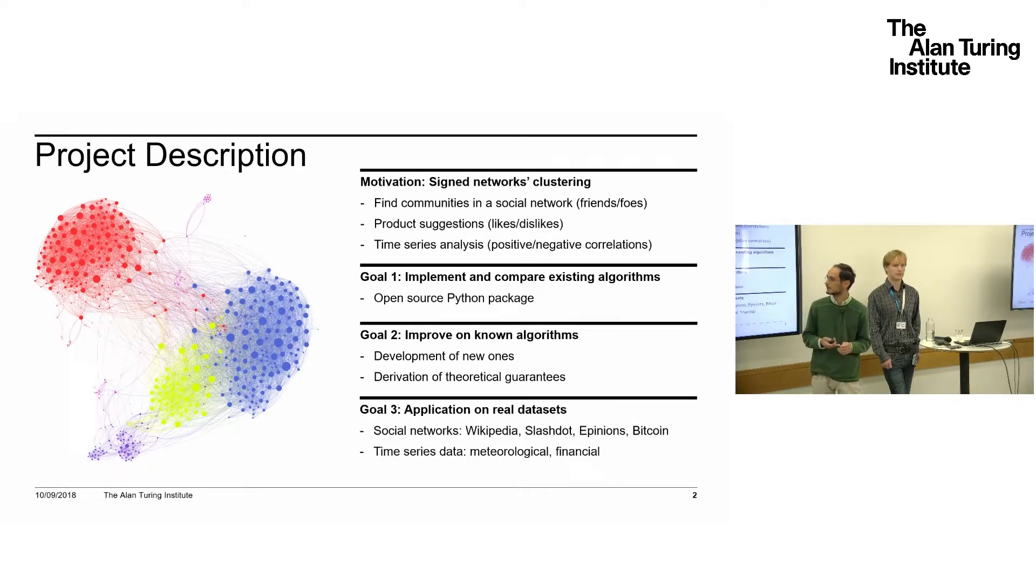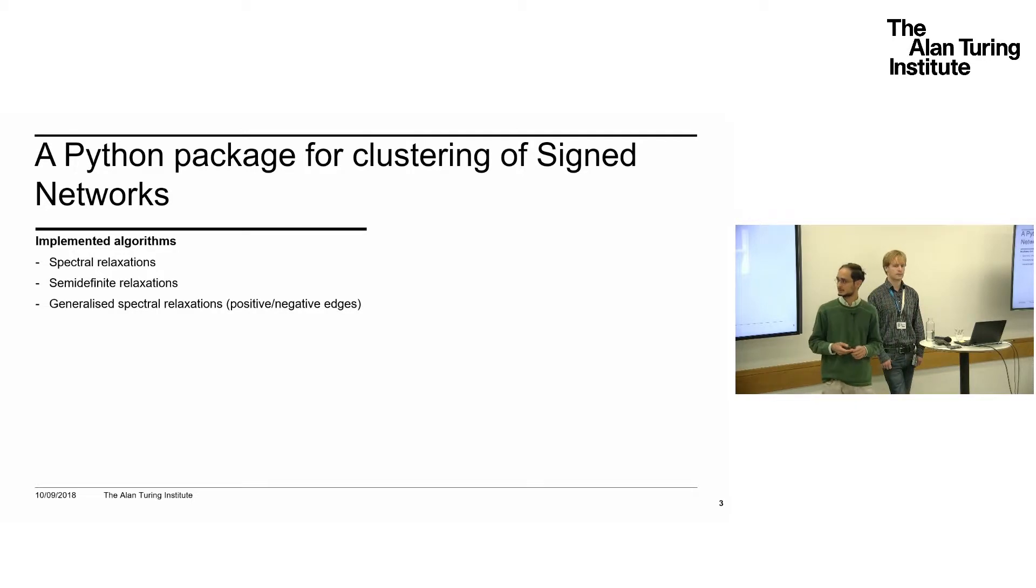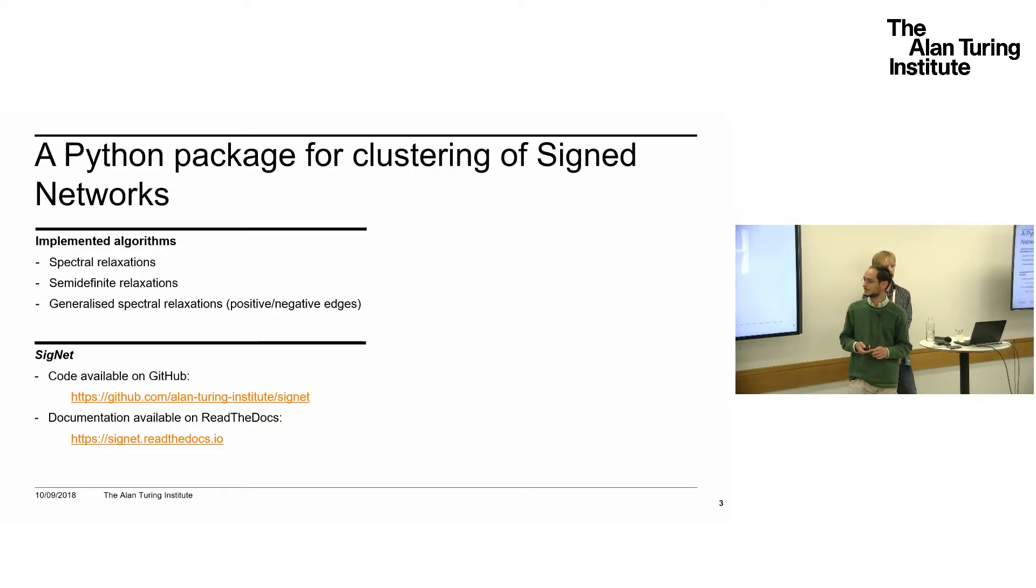Finally, we wanted to check how these new and old algorithms work on real datasets, on vast amounts of real data. We did write the Python package implementing essentially three kinds of algorithms, and these all work in a similar way. You start with an objective function that if maximized gives you the clustering—the assignments of nodes such that within each cluster you have positive weights and between different clusters you have negative weights. Then this objective function is relaxed in a convex way.